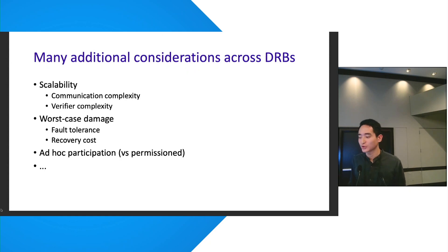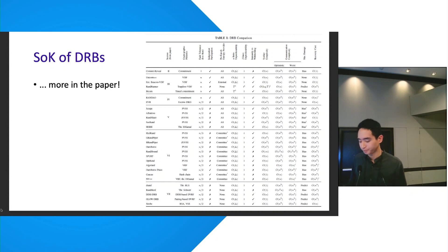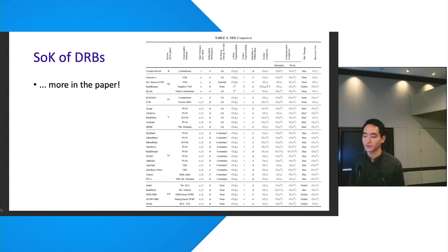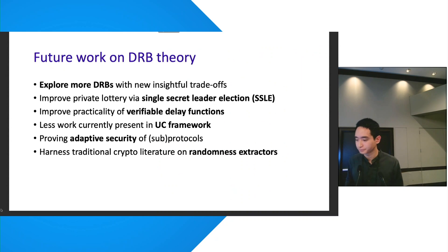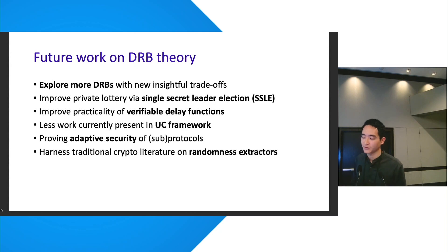There are many additional considerations across DRBs — the flowchart presented is a simplification. Other considerations include scalability, recovery cost, and ad-hoc participation. This is why there is no silver-bullet DRB that wins in all contexts. Future work includes exploring new DRBs with insightful trade-offs, different building blocks such as single-secret leader election, improving practicality of VDFs, and viewing security from different angles.